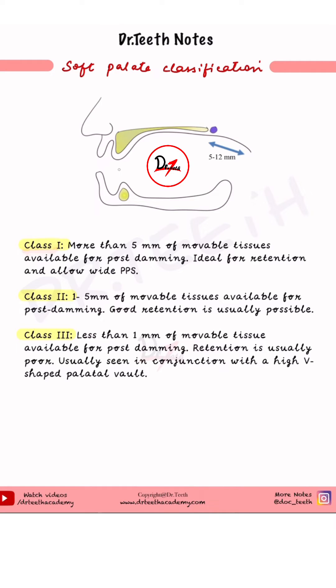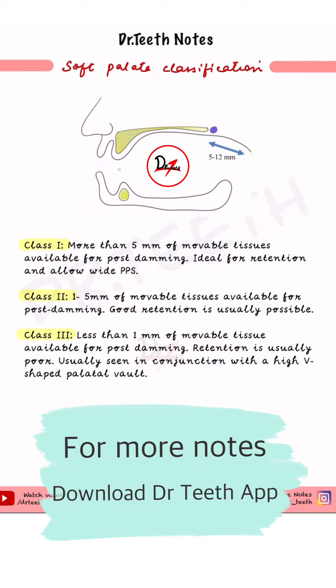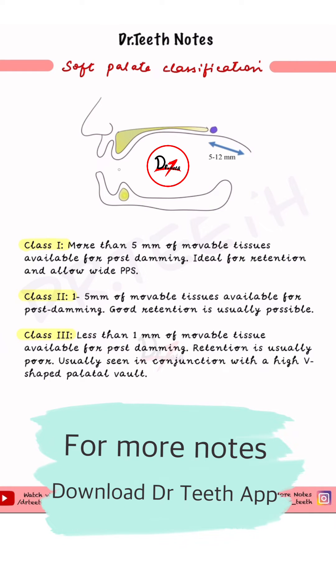Class 1 has more than 5 mm of movable tissues, which is ideal for retention and allows a wide PPS. It has less than 10 degree angulation.